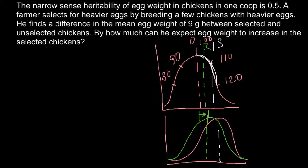Here is the key formula: total phenotypic variance (VP) equals genetic variance (VG) plus environmental variance (VE). So in order to achieve the best results, we need both the best genetics and the best environment.